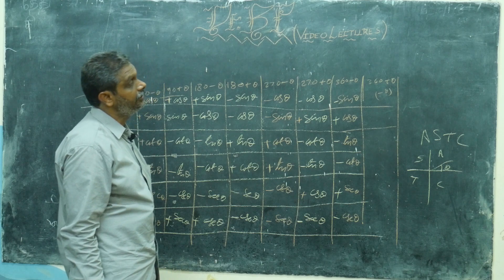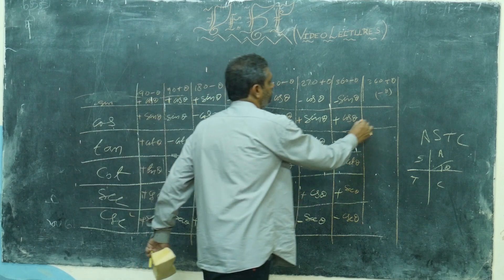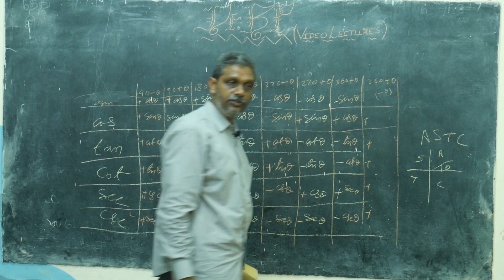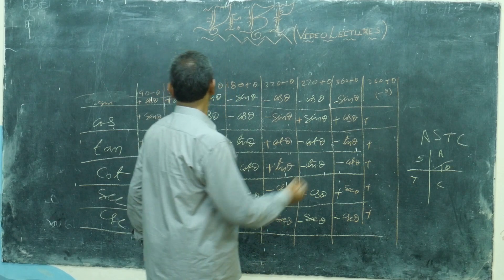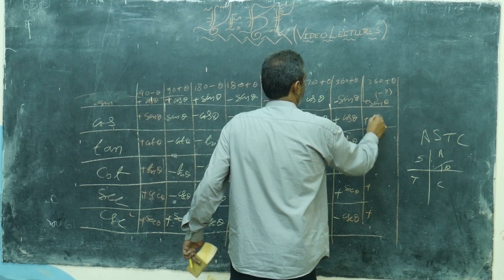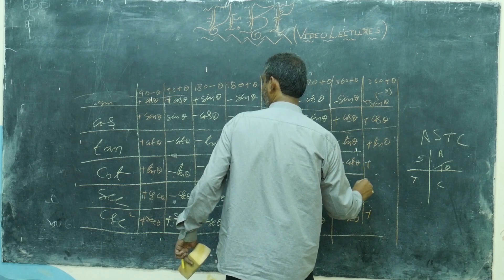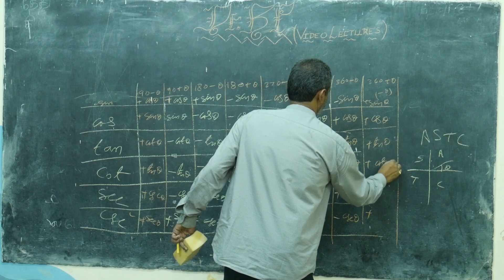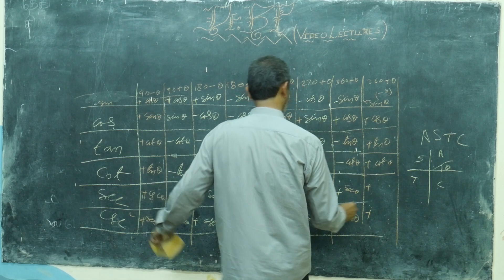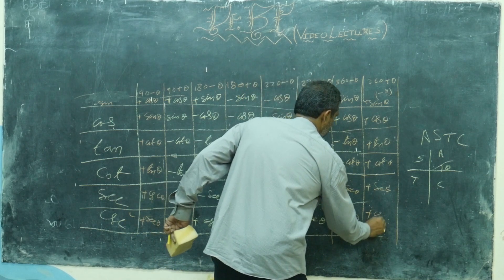Then 360 plus theta — where does it lie? First quadrant. First quadrant — all are positive. For 360, no change. So the same fellows will come: sin theta, cos theta, tan theta, cot theta, secant theta, cosecant theta.